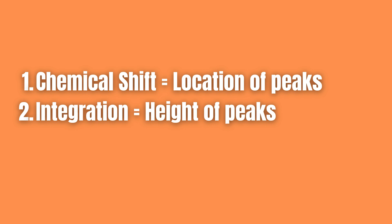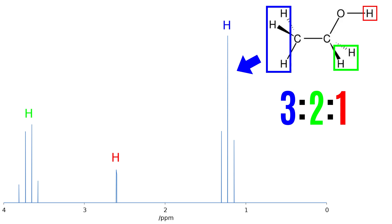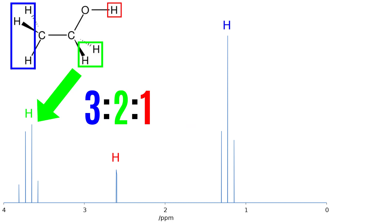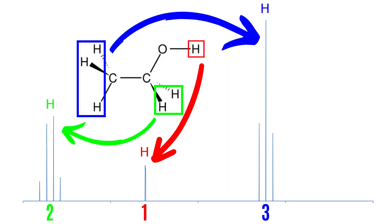Second is integration which has to do with the height of the peak in the spectrum. The integration is proportional to the number of hydrogens that share an identical chemical environment, meaning that the hydrogens that share the exact same distance to electronegative elements will share the location of the spectrum and their peaks will therefore be added to each other.